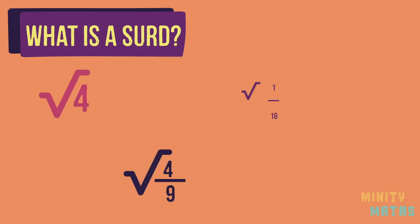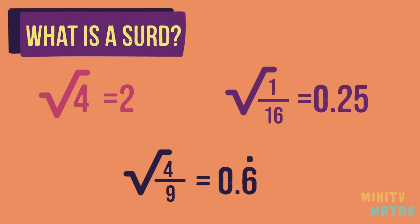Don't be fooled though, not all roots are actually surds. If you can find the exact root of a number and it can be written as a whole number, a terminating decimal or a recurring decimal then it is not a surd.